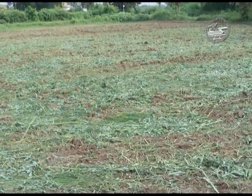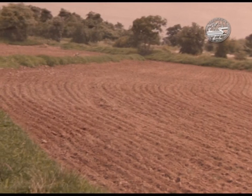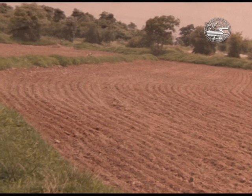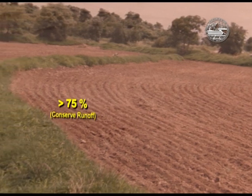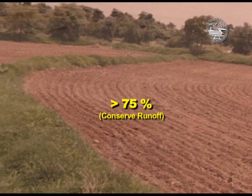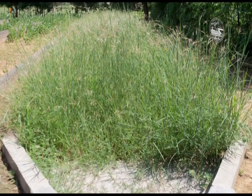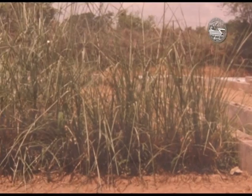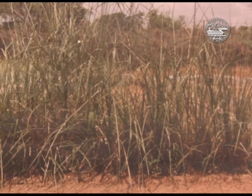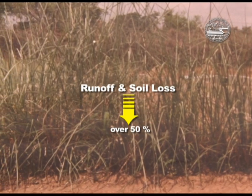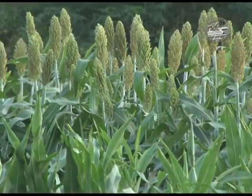For in-situ rainwater conservation, contour bunds at 0.7m vertical intervals were found effective in conserving more than 75% of the runoff in red soil. Vegetative barriers were found to be the most cost-effective and eco-friendly conservation measures. The planting of khas-khas grass across the slope at 11m spacing reduced the runoff and soil loss by over 50% and increased the sorghum grain yield significantly.